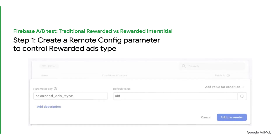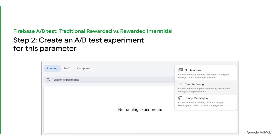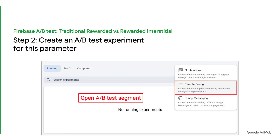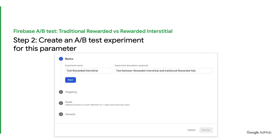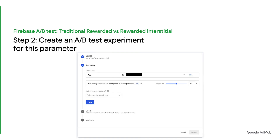Step 1: Create a remote config parameter to control rewarded ads type. Step 2: Create an A-B test experiment for this parameter. You will have to first open the A-B testing segment and create a remote config A-B test. Then, name the experiment and add a description. Next, decide your user base to test rewarded interstitial. From the targeting section, you can add more conditions such as user markets and percentage of target users you wish to test.